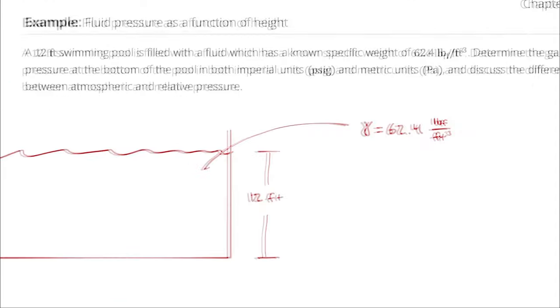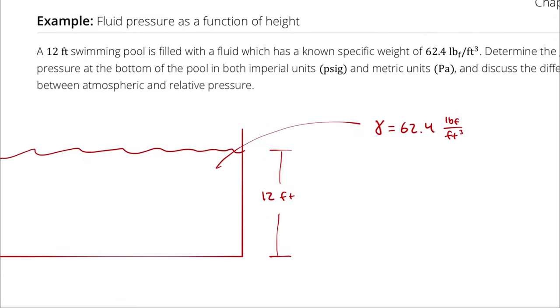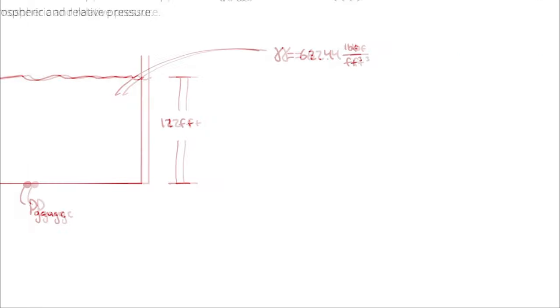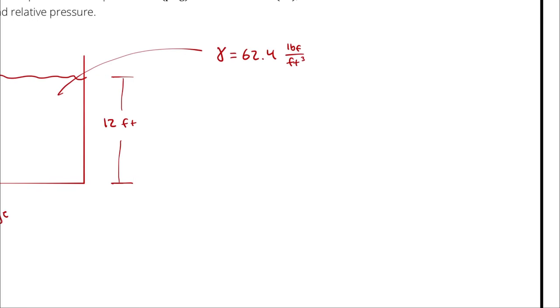I want to know the gauge pressure at the bottom of the pool. Remember that gauge pressure is going to be the pressure difference between the absolute pressure and atmospheric pressure, which means that I'm essentially looking for the pressure increase as a result of the water in the swimming pool.